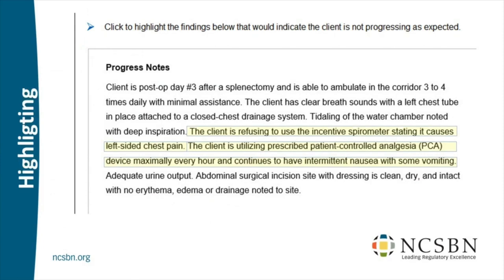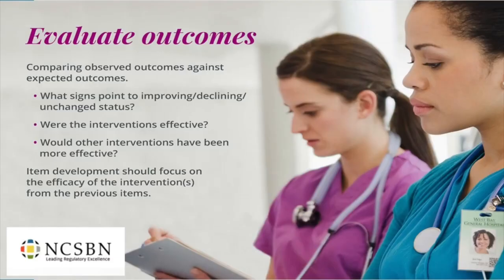We call this a highlighting item. In terms of the clinical judgment measurement model, this is about evaluation — in our model, we say 'evaluate outcomes.' A typical evaluate-outcomes item has a before-and-after of the client: before is when the nurse first arrived, after is after interventions have been performed. We had findings before, and we get new findings after — and we need to recognize which are good news, which are bad news, and whether an intervention might have been ineffective.